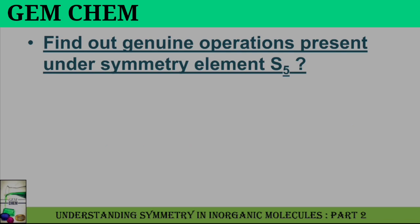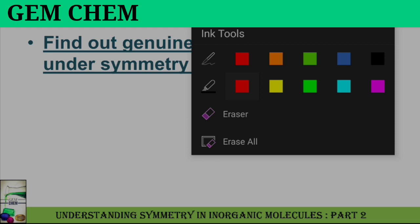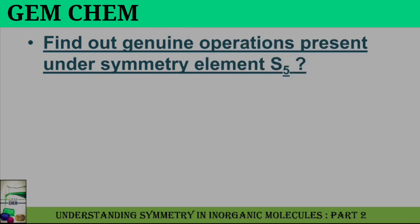First we are going to deal with the genuine operations of S5. Since S5 is an odd number, there will be only n minus 1 operations, so we get 4 operations. Let us find out the operations. For S5¹, we have C5¹ times sigma. This is a new operation and we can say that this is a genuine operation.